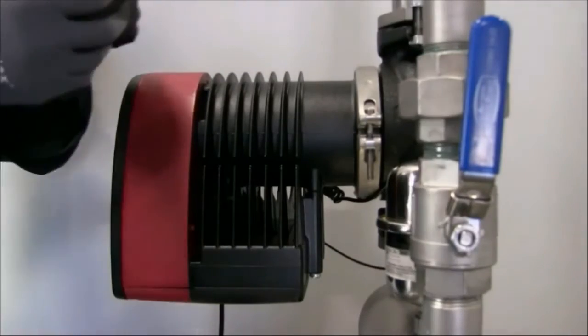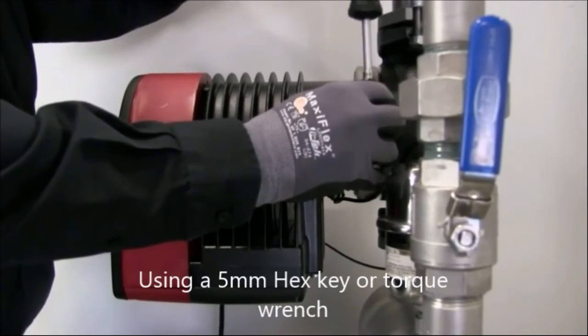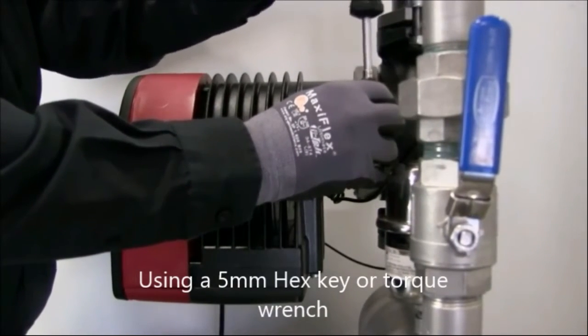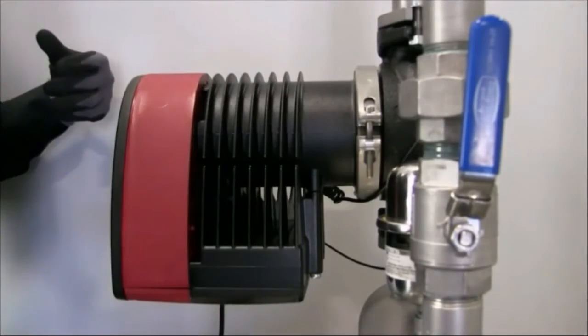So prior to filling the system, you just want to loosen the clamp that's holding the pump head and the pump housing together. A quick warning that if you loosen this too much, the pump head could be completely disconnected from the pump housing.